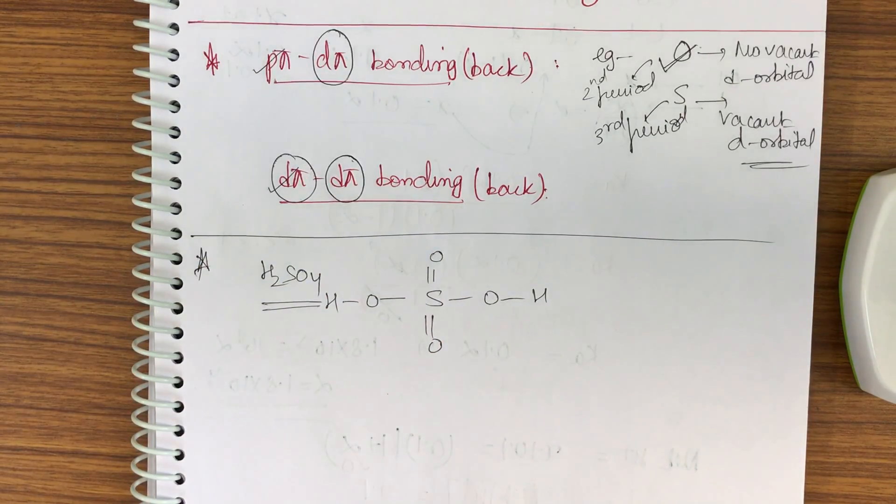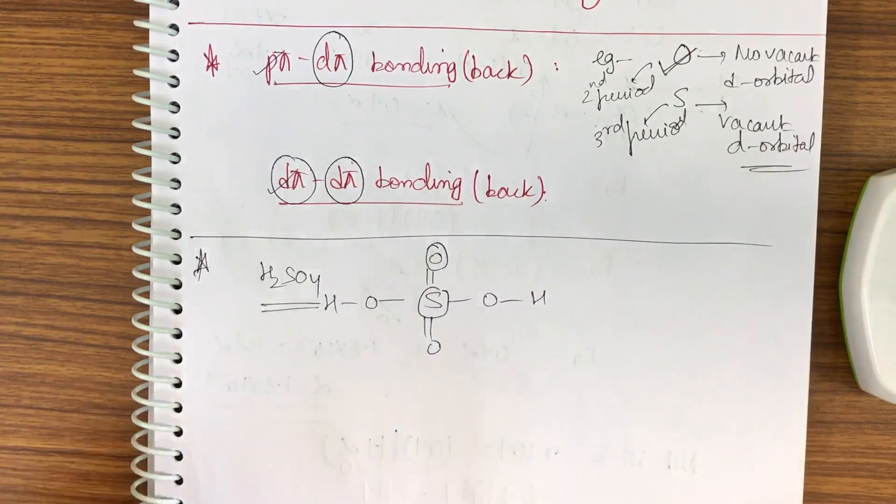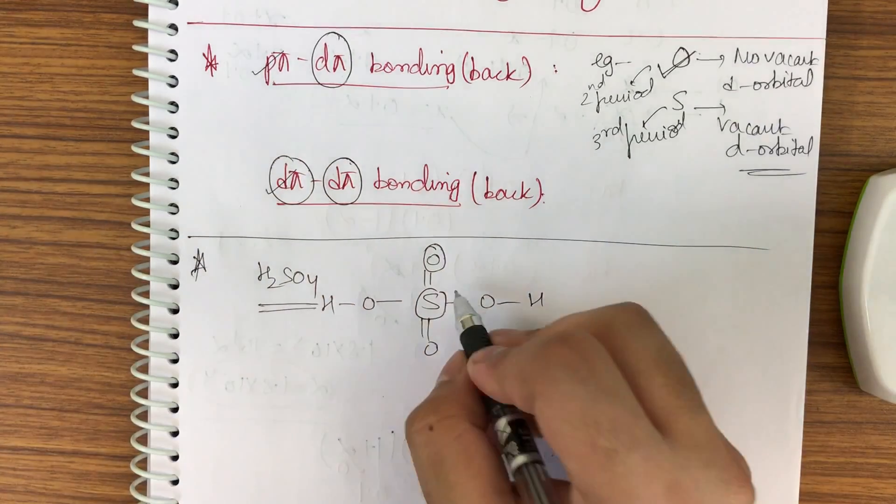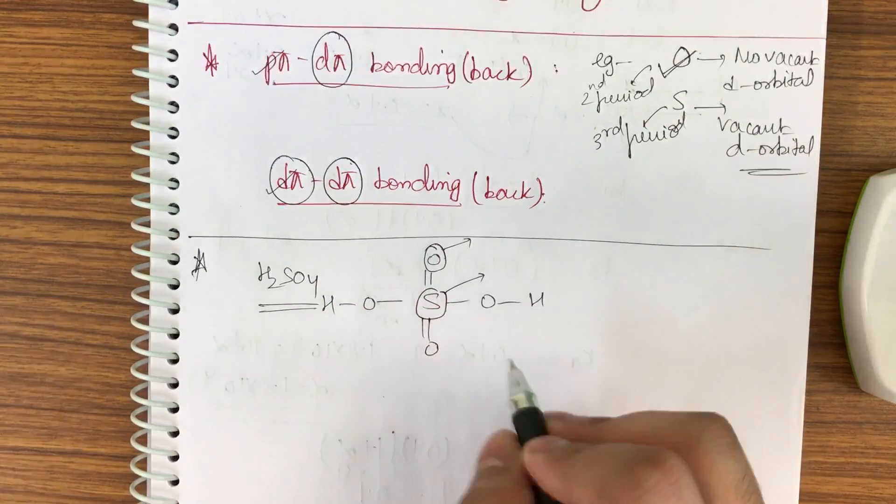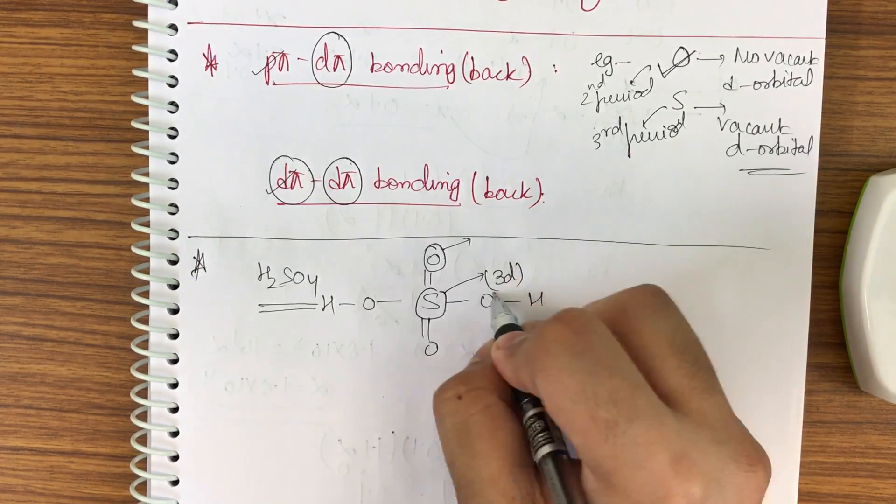We can see two pi bonds, but we have to decide whether it is ppi-dpi or some other type of bonding. So how to decide?